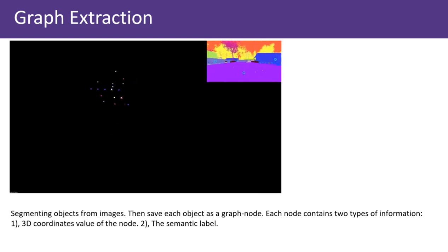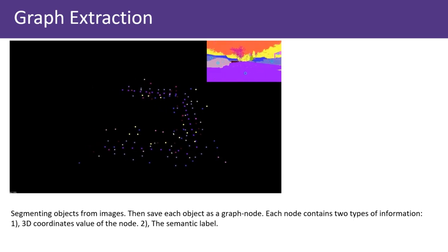Given odometries, related depth maps, and semantic maps, we first generate semantic graphs. Objects are segmented from images. Then we save each object as a graph node. Each node contains two types of information: